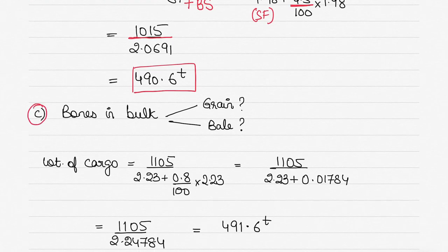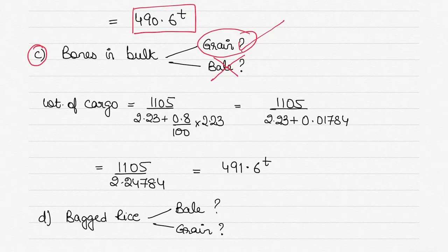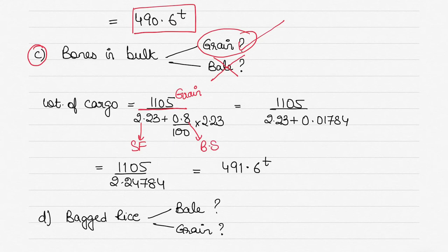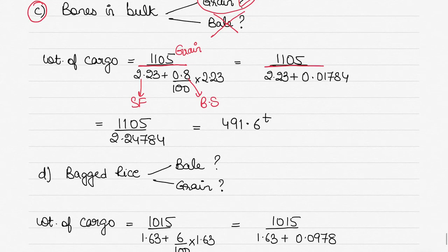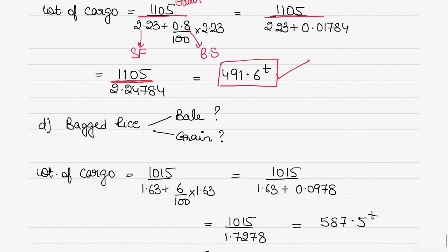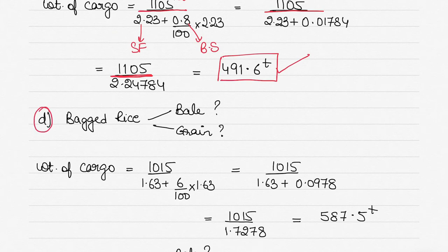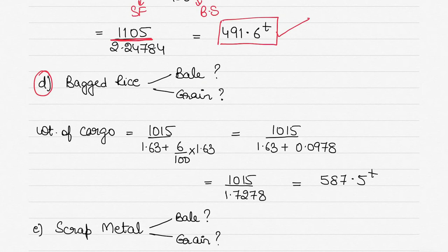For bones in bulk, when loading bulk cargo you don't need to worry about bale capacity — we use grain capacity because you're loading in bulk and don't need drainage or side protection. Grain capacity is 1105, stowage factor is 2.23, plus broken stowage of 0.8% of 2.23. After that straightforward calculation, you get 491.6 tonnes.